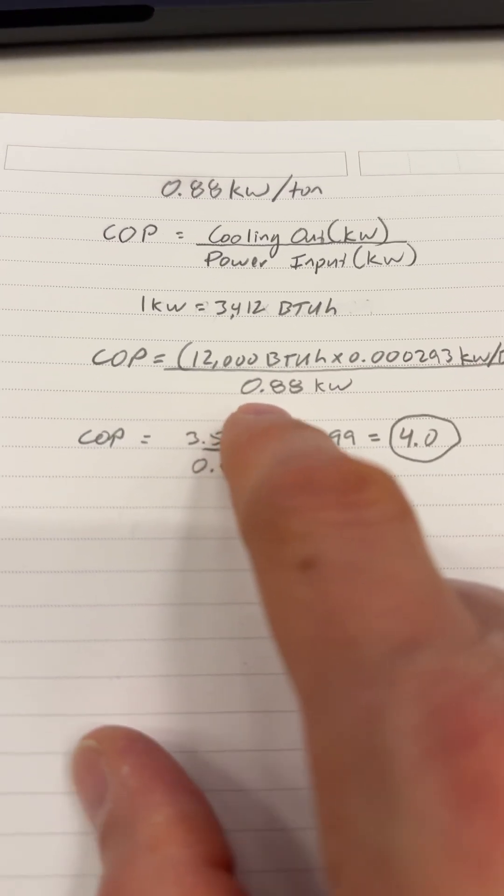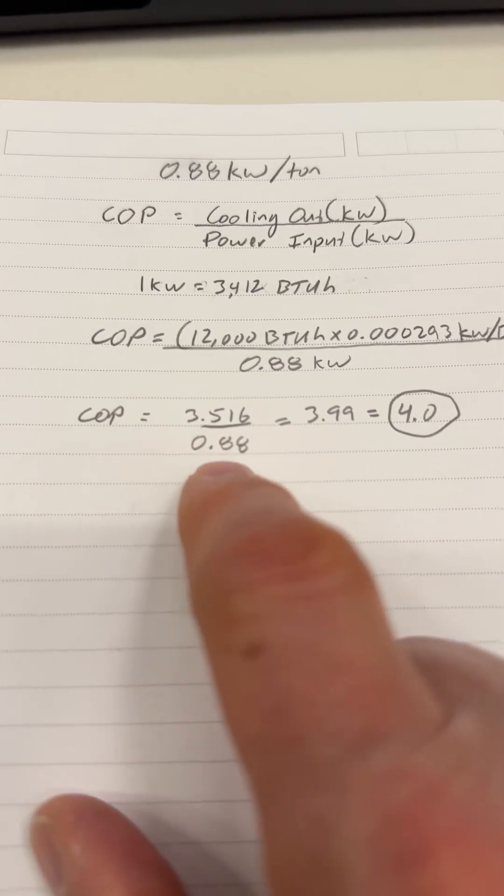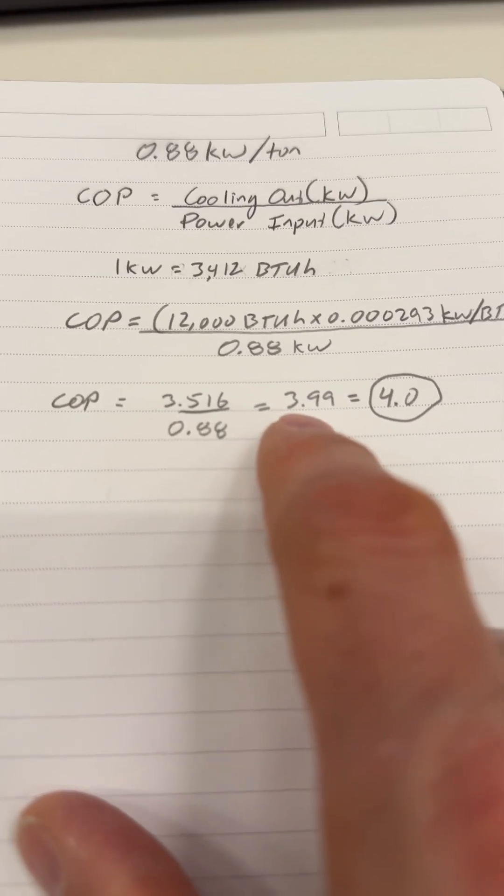Divided by the kilowatt input, which turns out to be 3.516 divided by 0.88, which equals 3.99.